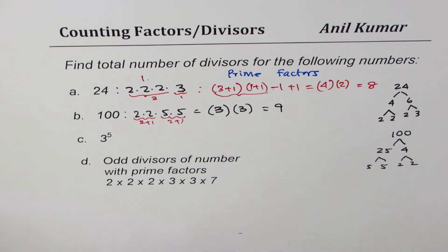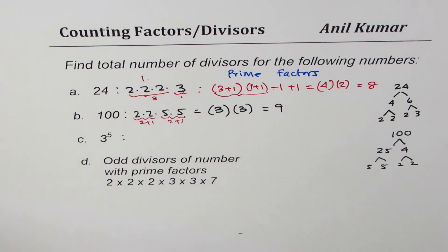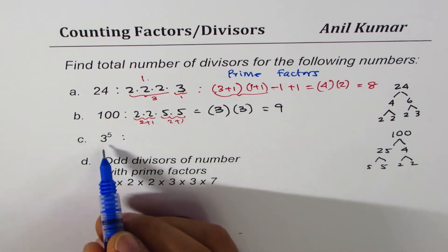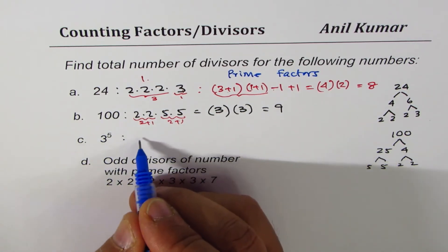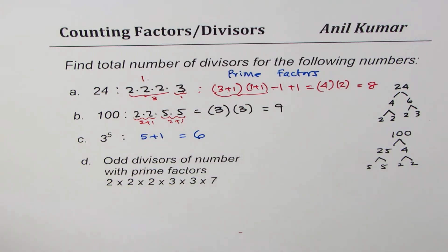Next one here is 3 to the power of 5. Well we already know there are 5 3's, right? So the number of combinations is 5 plus 1 which is 6. Easy.